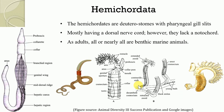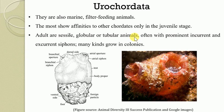The Hemichordata are the deuterostomes. Deuterostome means whatever blastopore is present during embryonic development, that blastopore gives rise to the formation of the anus. So these hemichordates are deuterostomes with pharyngeal gill slits and mostly having a dorsal nerve cord. However, they are lacking the notochord as adults. All or nearly all hemichordates are benthic marine animals.